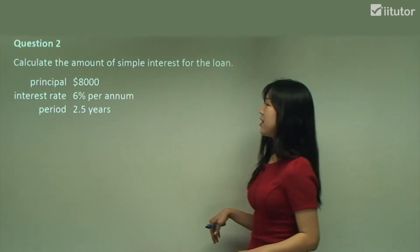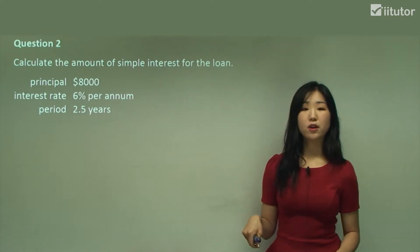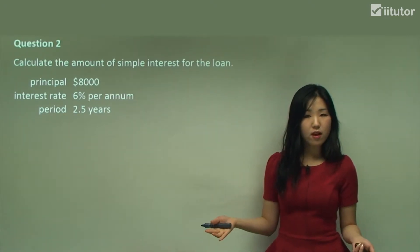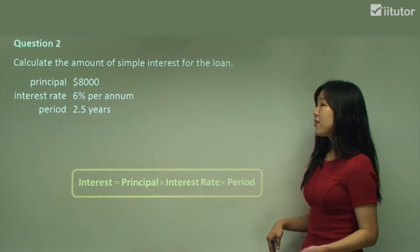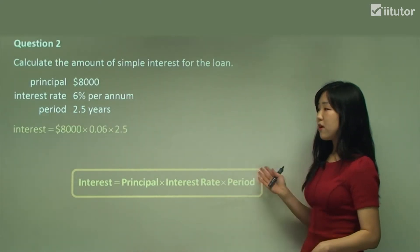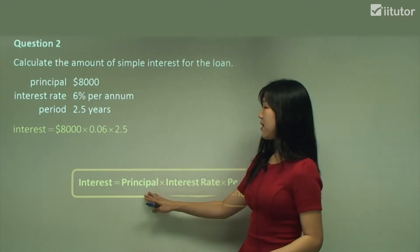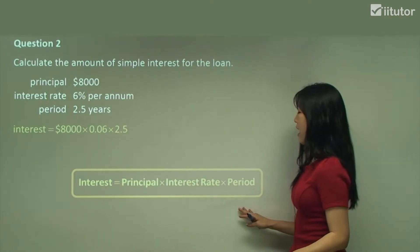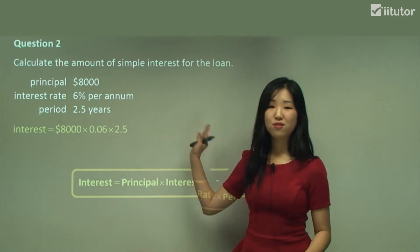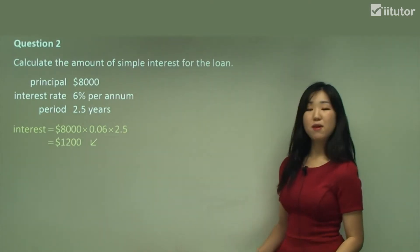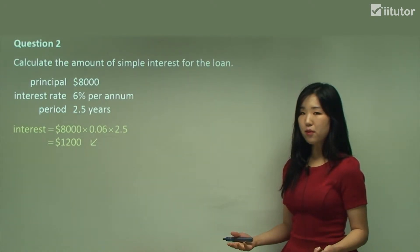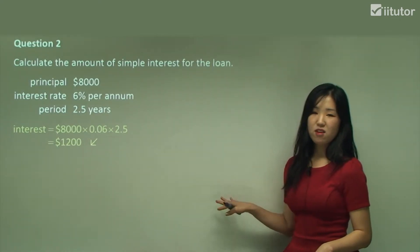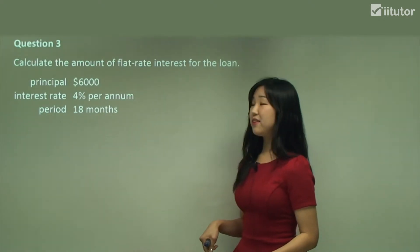Question two: calculate the amount of simple interest for the loan. The principal is eight thousand dollars, the interest rate is six percent per annum, and the period is 2.5 years. We plug all values into our formula: Interest = 8000 × 0.06 × 2.5 = one thousand two hundred dollars. It's very simple — just multiply the three values together using the formula.